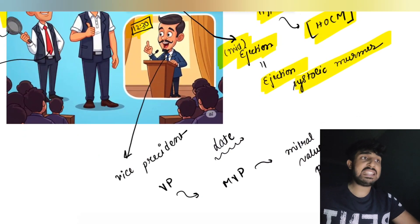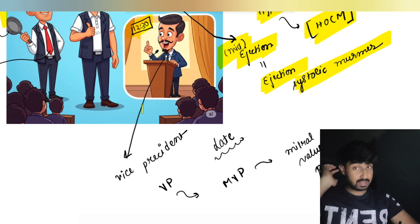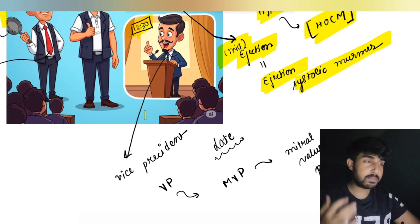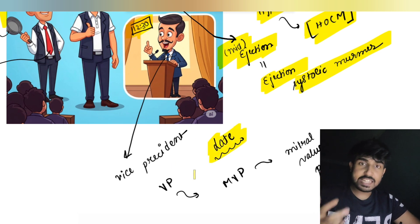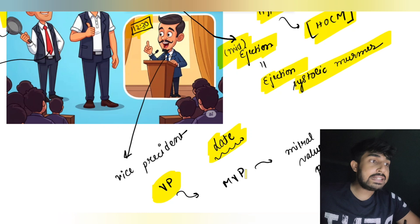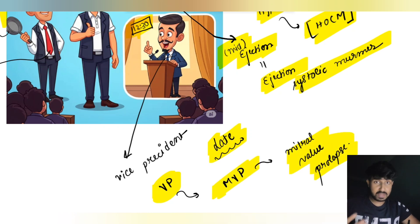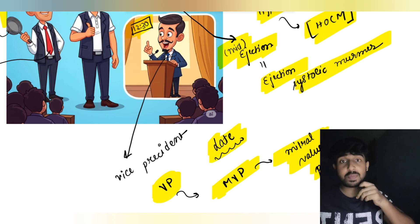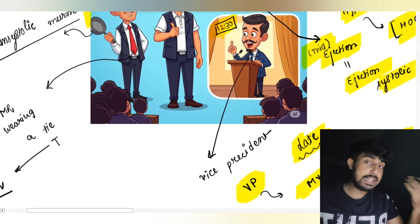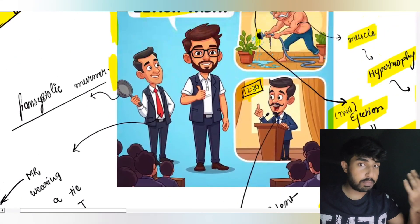He is our vice president. The vice president has given a speech at 12:30 — that represents mitral valve prolapse, which is basically your late systolic murmur.